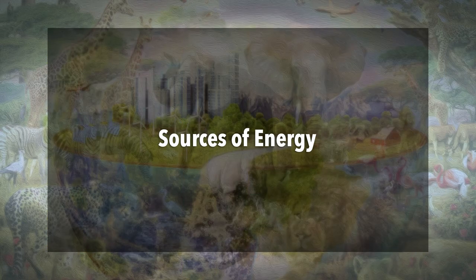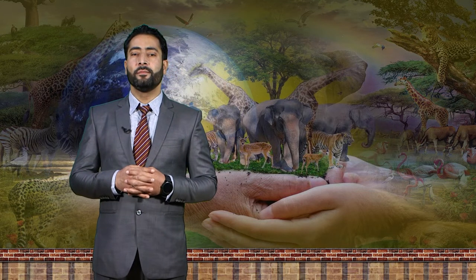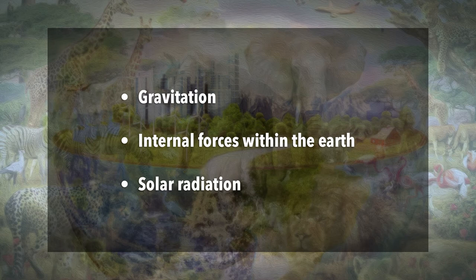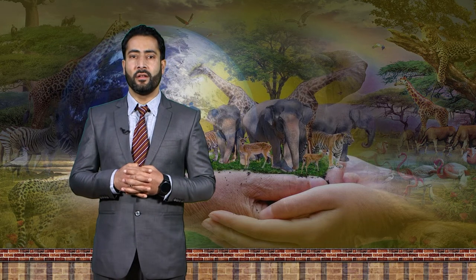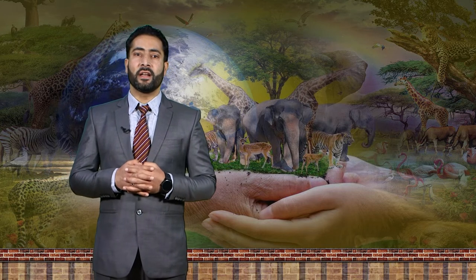Now the sources of energy. Three sources of energy account for all the work of the ecosystem: gravitation, internal forces within the earth, and solar radiation. Solar radiation is significant for ecosystems — it originates from the sun and is the source of energy for life, which sets the ecosystem apart from other natural systems.